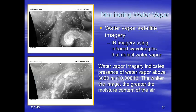We can also monitor water vapor from satellite imagery. IR imagery uses infrared wavelengths to detect water vapor above about 3 kilometers (about 10,000 feet). The whiter the image, the greater the moisture content. In the image you can see a hurricane with all its moisture wrapped around it in a comma shape.